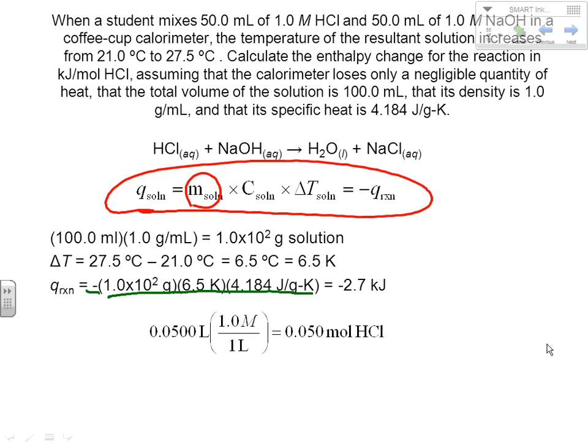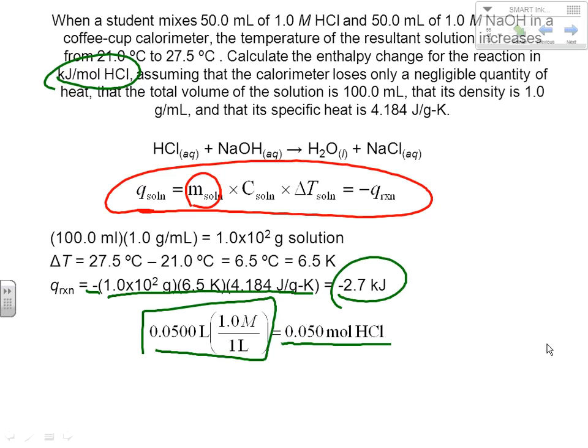If you know a volume and a molarity, that often means you're calculating moles. The question asks for heat in kilojoules per mole of HCl. In this reaction, we had 0.050 moles of HCl reacting — calculated using our volume-concentration relationship. When 0.050 moles of HCl reacted, we got −2.7 kJ. To find kilojoules per mole, divide: −2.7 kJ ÷ 0.050 mol = −54 kilojoules per mole.